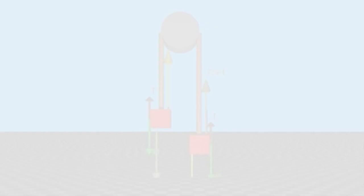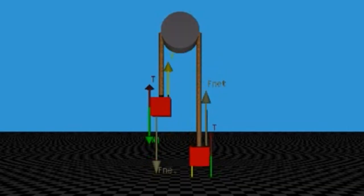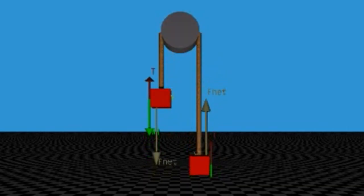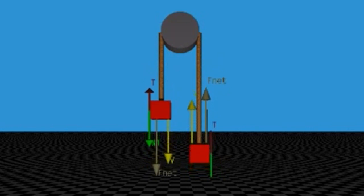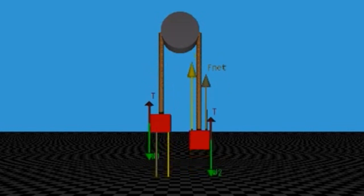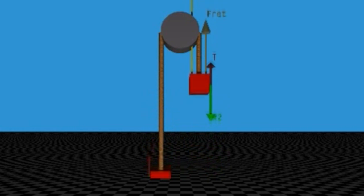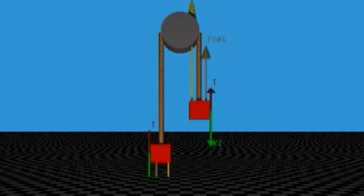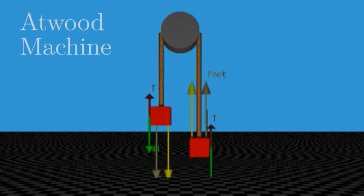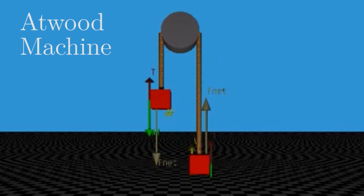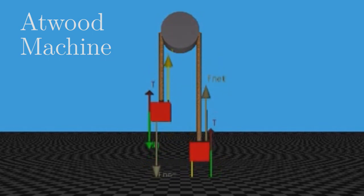Hello everyone, welcome to our tutorial. This video is all about the double Atwood machine. Before proceeding to the problem, an arrangement in which two objects of unequal mass are hung vertically over a frictionless pulley of negligible mass is called an Atwood machine. This device is sometimes used in the laboratory to calculate the value of g.